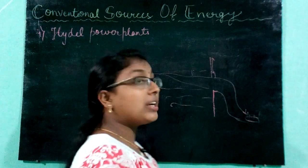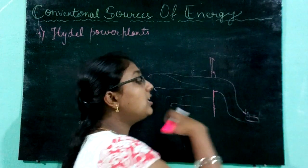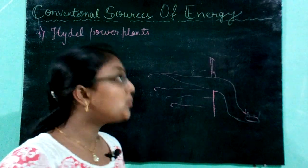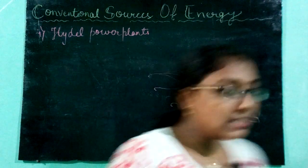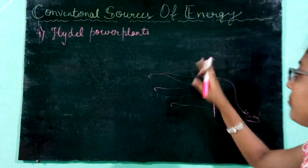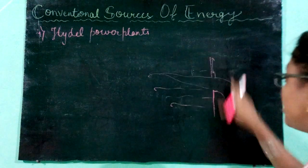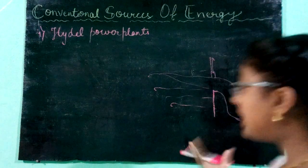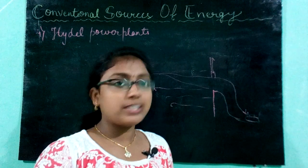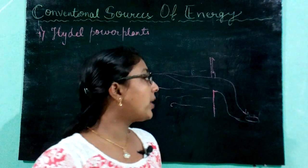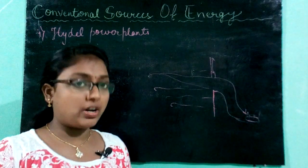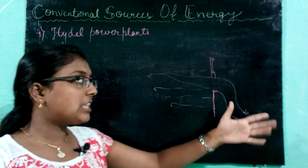As a result, the generator works and electricity is produced. In this way, hydroelectricity is generated. Water coming from a high area to a low area has much energy, so a large amount of hydroelectric power can be generated.